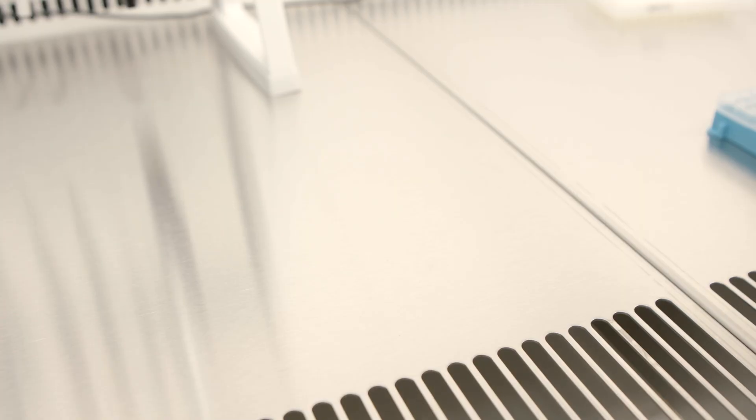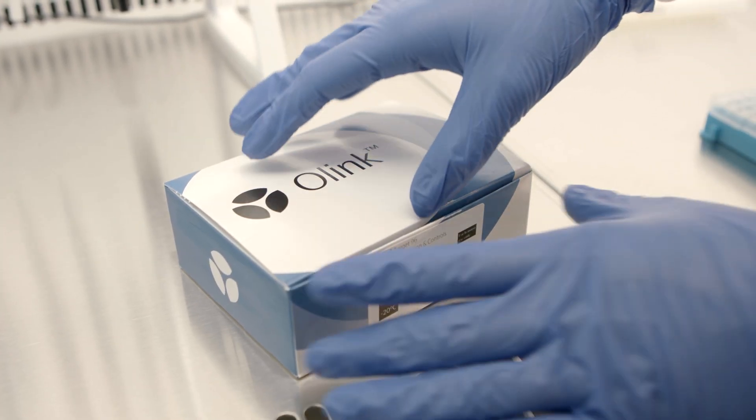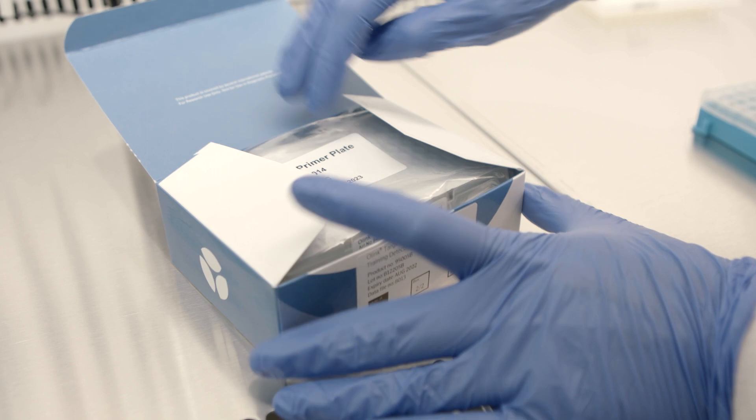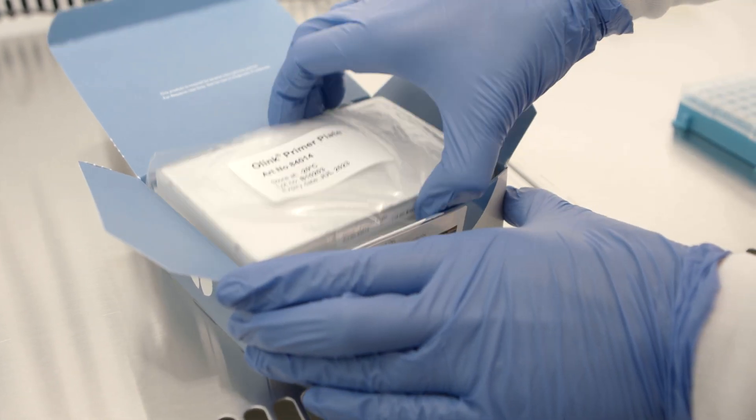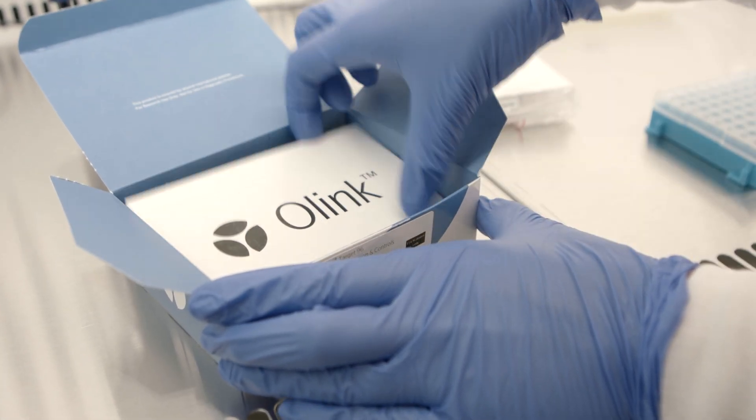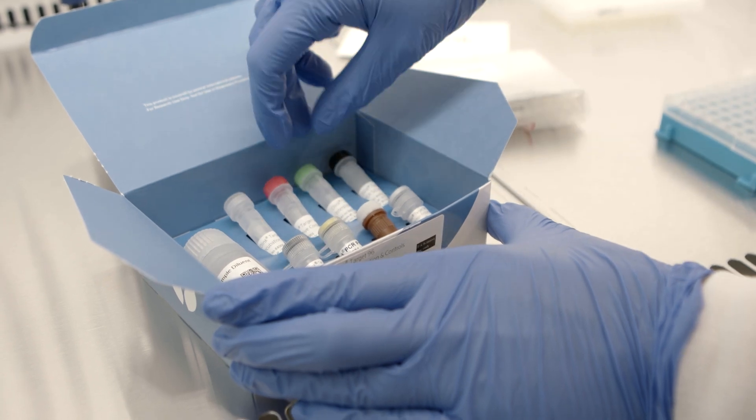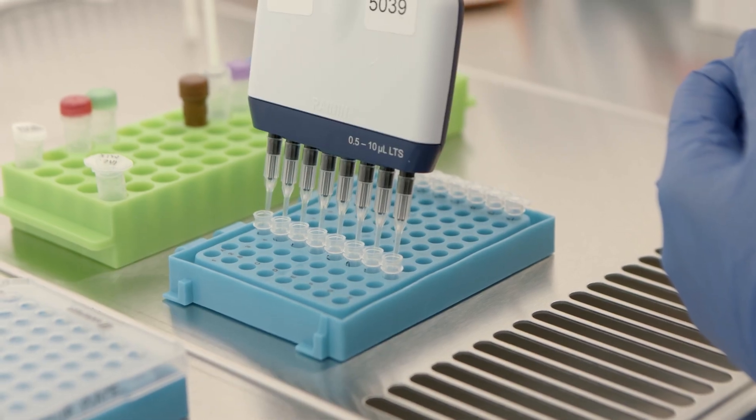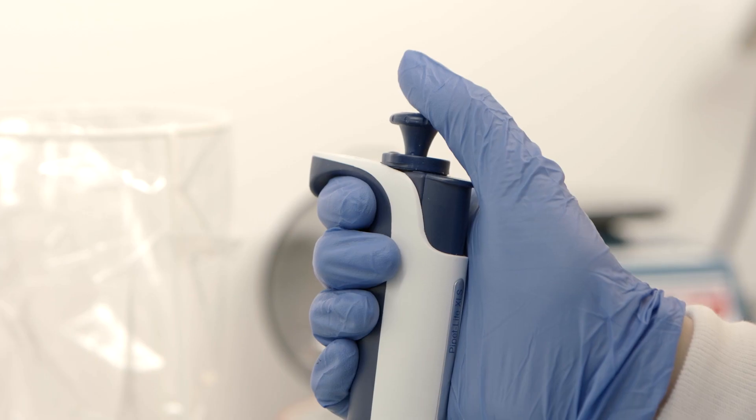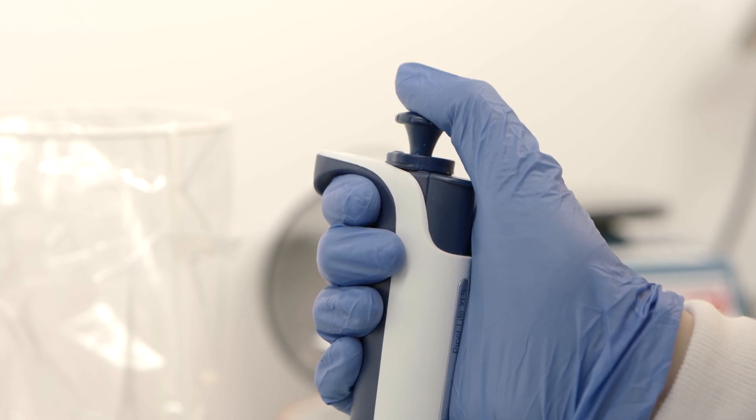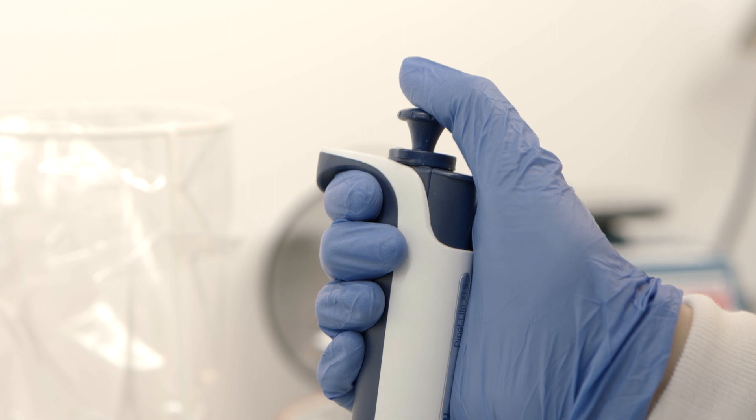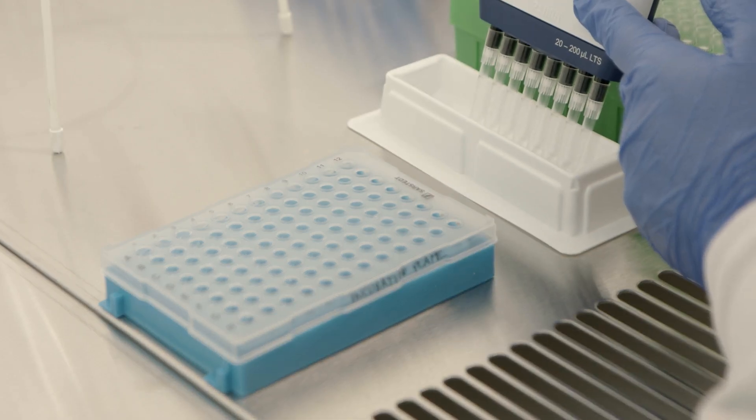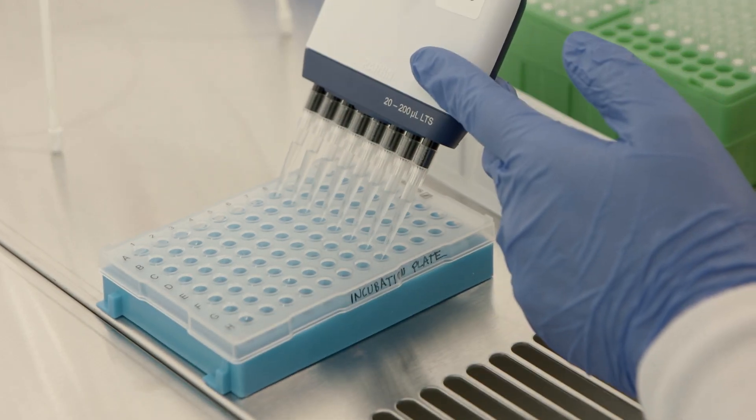Our signature Q100 instrument is specifically designed for qPCR readout of all our target panels. The following instructional video illustrates the workflow for analysis of the target 96plex panel focusing on inflammation using human serum or plasma samples. O-Link panels that target high abundant proteins require an additional sample preparation or dilution step. The inflammation panel run in this video does not require the extra dilution step.